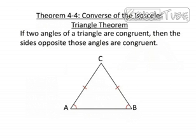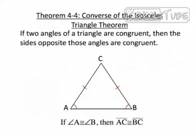So now let's talk about Theorem 4-4, which is the converse of the Isosceles Triangle Theorem. It states that if two angles of a triangle are congruent, then the sides opposite those angles are congruent. That simply means that since angle A is congruent to angle B, then segment AC is congruent to segment BC.